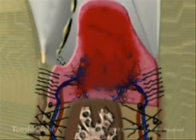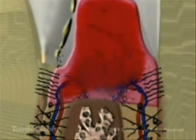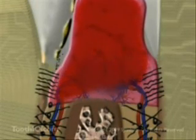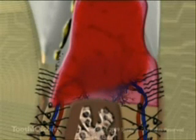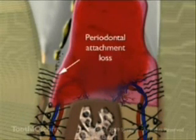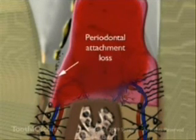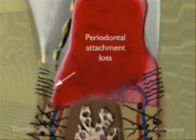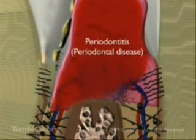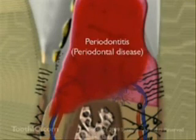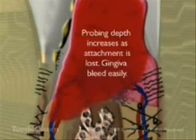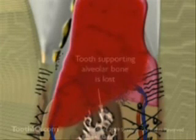Continuous exposure to acids and enzymes from plaque bacteria and the body's immune response to them eventually causes the periodontal attachment to be lost, an irreversible condition known as periodontitis. The sulcus depth increases to the point where the patient can no longer effectively remove plaque, leading to the destruction of tooth supporting bone.